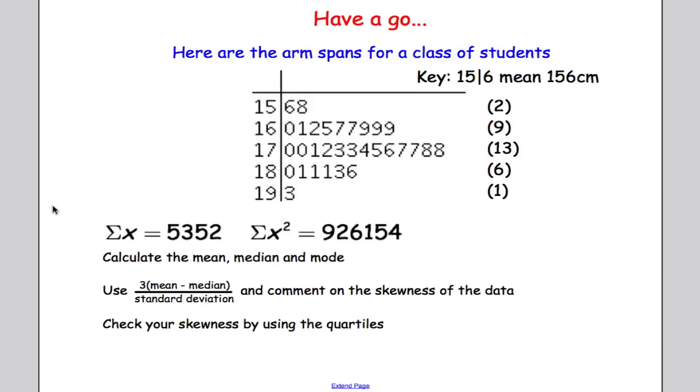Time for you to have a go. Here are the arm spans for a class of students—they're actually my own students. Try and calculate the mean, the median, and the mode, and then use three times the mean minus the median over standard deviation, comment on the skewness, and then check your skewness by using the quartiles. Pause the video now and try the question.